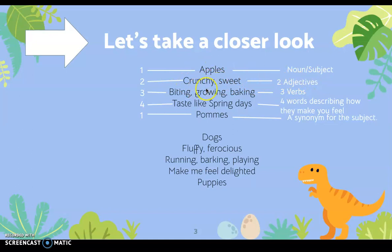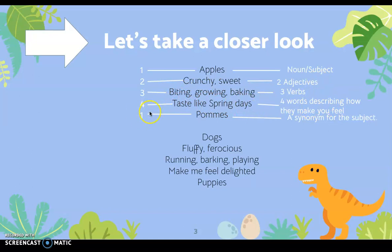What do you notice as you go down? How many words are in each line? For line three — biting, growing, and baking — three verbs, which are action words. Line four has four words and tells you how the subject makes the writer feel, so I said 'tastes like spring days.' And the last line is back to just one word, and it's a synonym for the subject — another word for what the subject is.